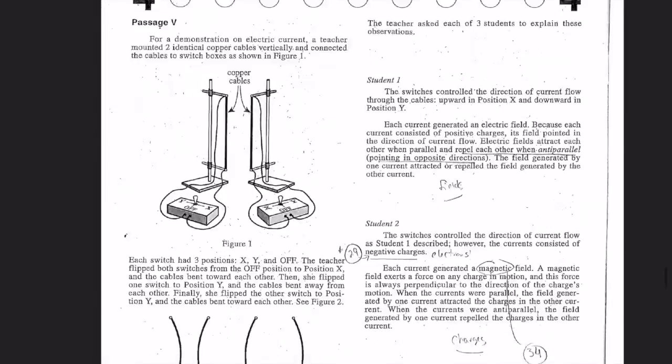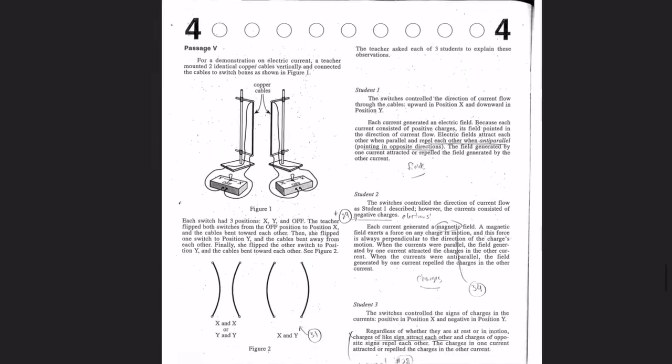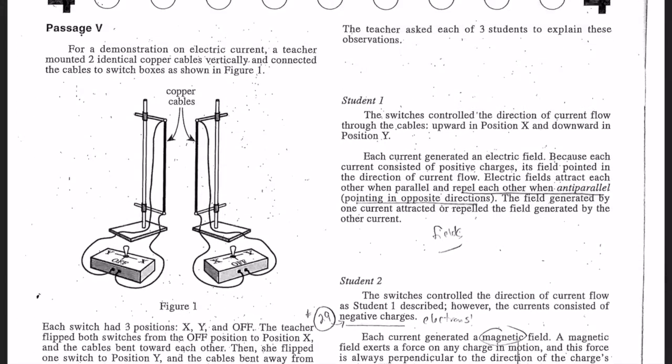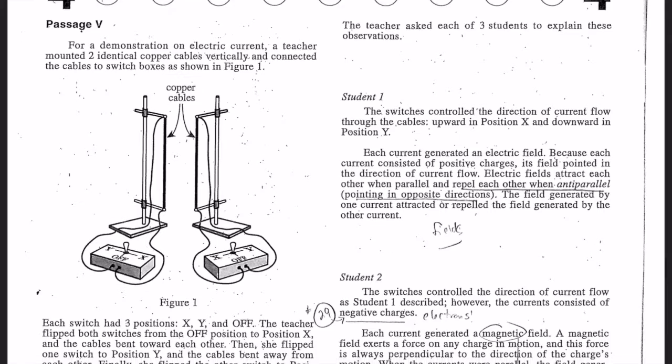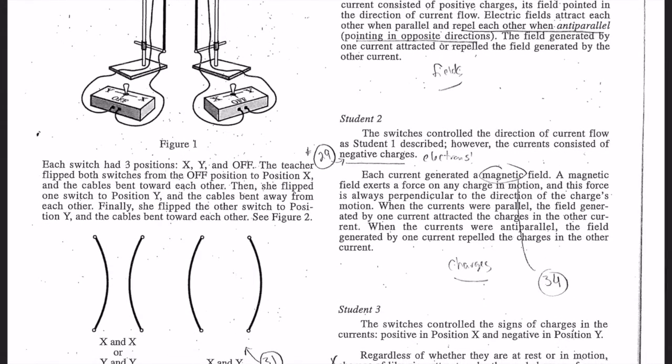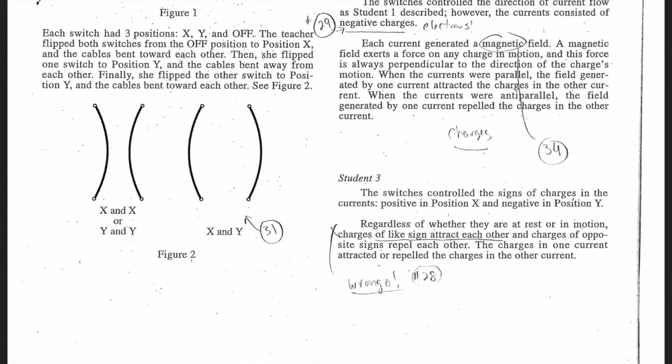Pause again. This is not a graph, this is a picture, and it says student one, student two, and student three. I'm going to pick out the major things about each student. This person says electric fields attract each other when they're opposite, only when anti-parallel - that's talking about fields. Student two is talking about the negative charges, the electrons, and each current generates a magnetic field. Number three: it's actually wrong. It says the switch is controlled by the signs, positive and X and negative and Y. Well, if that were true they would attract. But this is wrong - this is what they say: regardless of whether they are at rest or in motion, charges of like signs attract. No - opposites attract. So student three is wrong, but just remember they're wrong, and they're going to ask you questions about why they're wrong.